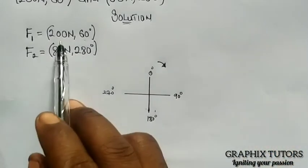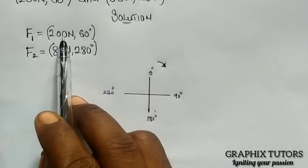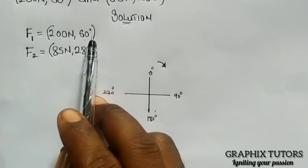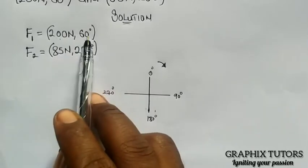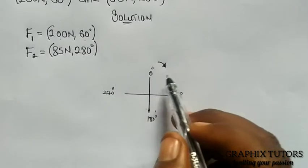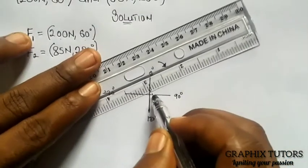So back to this. Now we have F1 is 200 Newton 60 degree. The magnitude is 200 Newton acting at 60 degree. So for my 60 degree, we fall somewhere around here.